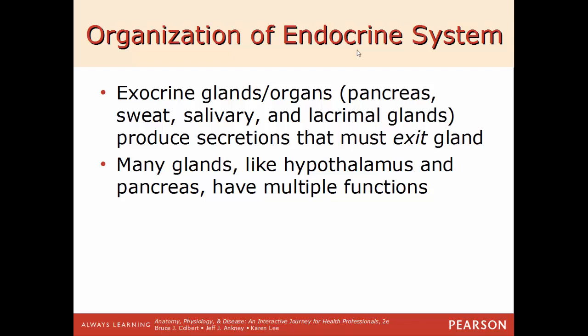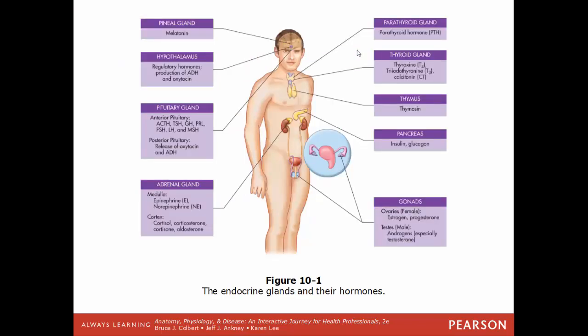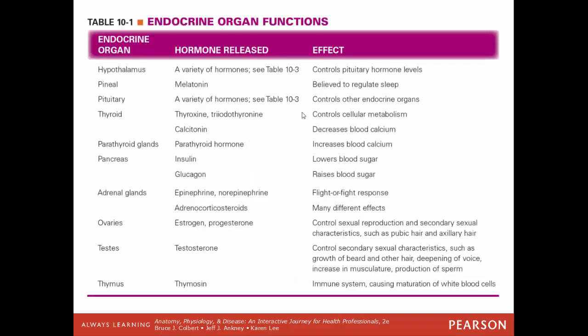Some common examples of endocrine glands and their hormones: the pineal gland in the brain, the hypothalamus, the pituitary gland — the master gland — the adrenals sitting atop the kidneys, the parathyroid, thyroid, thymus, and for males the testes and for females the ovaries, as well as the pancreas. There is a table of basic endocrine organs, the hormones they release, and their effects, which we'll spend a good bit of time covering in this video.